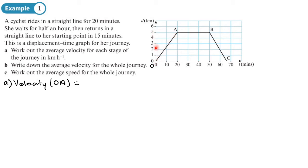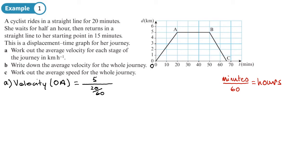Velocity is displacement over time. The displacement from the starting position is 5 kilometers. The time is 20 minutes, but since we want kilometers per hour, we convert: 20 minutes is 20/60 hours, which is one third of an hour. So velocity = 5 ÷ (1/3) = 5 × 3 = 15 kilometers per hour.